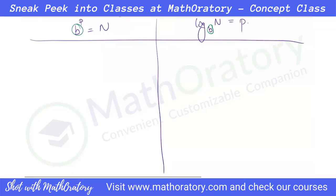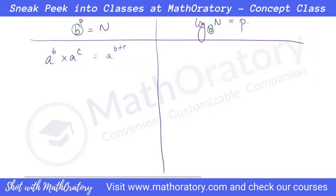Let's start with a very basic property. If I have a to the power b multiplied by a to the power c, a to the power b itself is a multiplied b number of times, and then we are multiplying a c number of times. So effectively, what we have done is multiplied a a total of b plus c times. So if the numbers are multiplied, the powers get added.